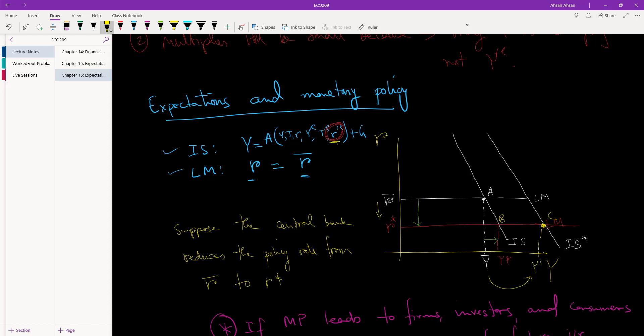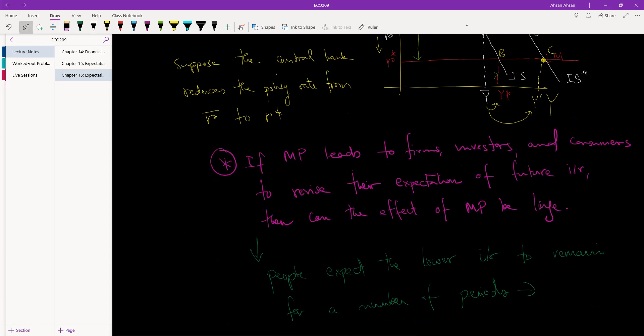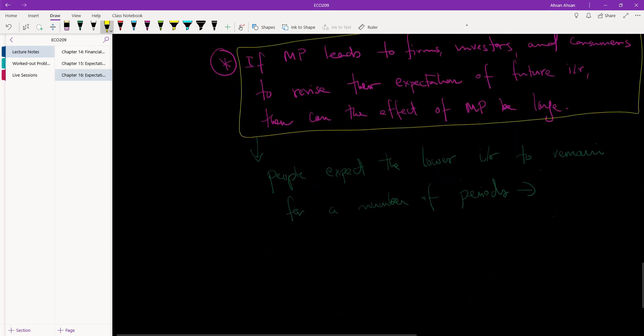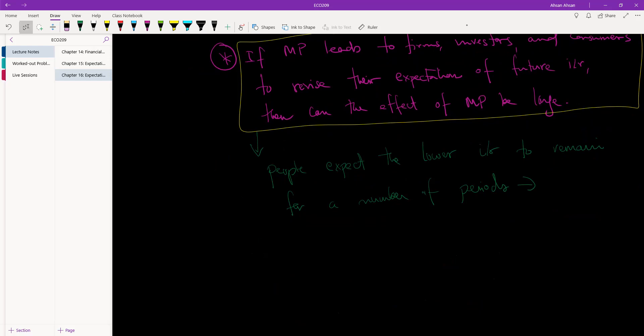If expectation had not changed, then we would have seen a relatively smaller change in output. So the takeaway from here is that once we introduce expectation into the mix, the strength of monetary policy depends entirely on what people's expectations are. If expectations change, then we can have a strong effect of monetary policy. Otherwise, it won't be possible. In the next video, we are going to talk about fiscal policy.